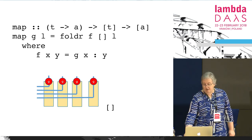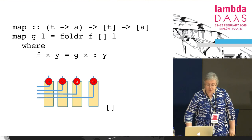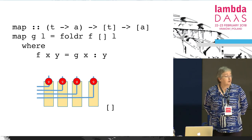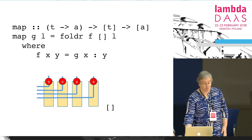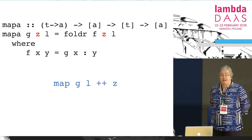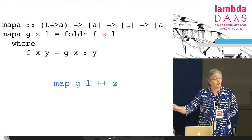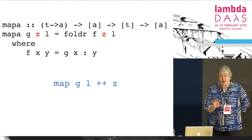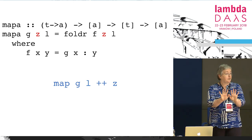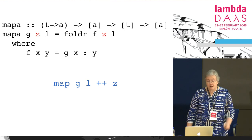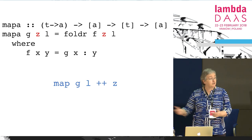One final map-like function: instead of sticking an empty list into the fold-right, we add a zero instead. So mapA of G and some zero is fold-right of the same F as before, but with the zero on the right-hand side. This does a combination of map and append — that plus-plus combines two lists to give a longer list. With fold-right you can do something that is like a combination of map and append, and we'll use that later in an example.